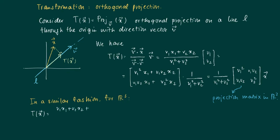Well, in a similar fashion, this also works for R3. So the projection on the line in R3, now our v has three components and we use a formula similar to the one we have here.